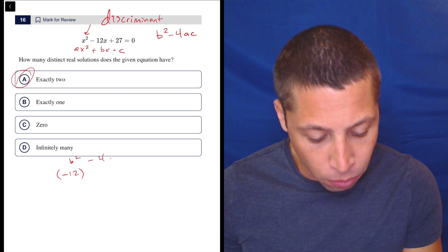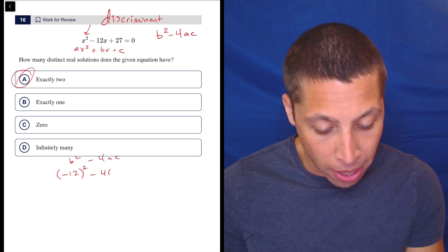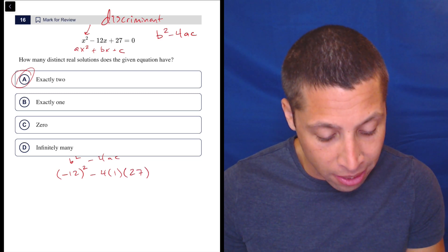So b squared minus 4ac, the b is negative 12. So that goes in there. Minus 4a is 1 because there's no number in front of the x squared. So it's 1. And c is 27.